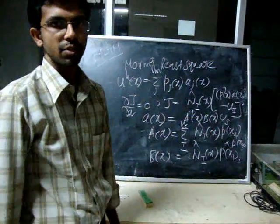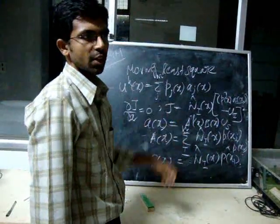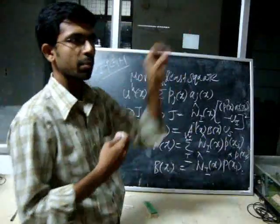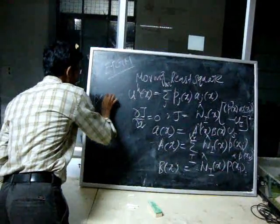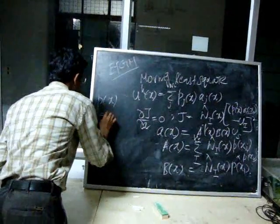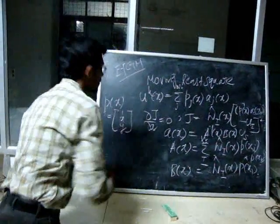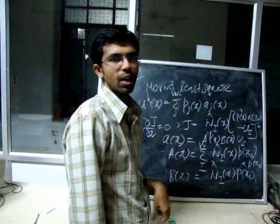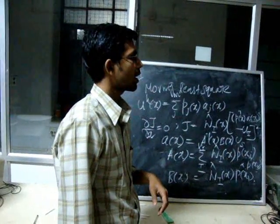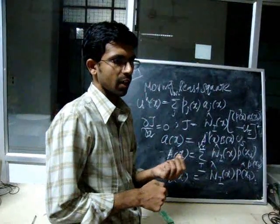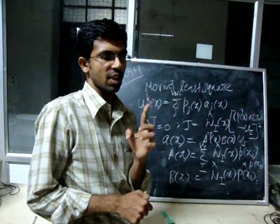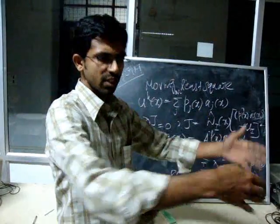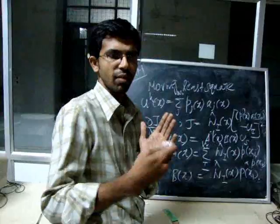The vector of basis functions p(x) is usually chosen from Pascal's triangle. Depending on the order of polynomial needed, we pick the terms from Pascal's triangle. For first-order monomials, p(x) = [1, x, y], a 3×1 vector. The weight function is a cubic or quartic spline. It has maximum value at the point of interest and decreases as you move away, vanishing completely beyond a certain limit.